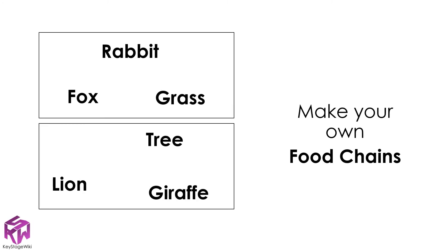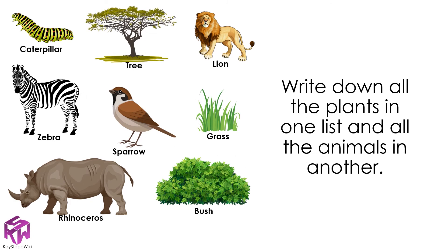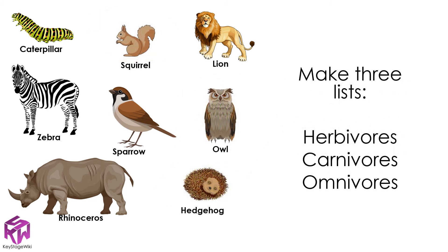The answers to the following questions are shown at the end of the video. See if you can write down your own two food chains using the examples — pause the video now to give it a try. Sort these into two lists: one for all the plants and one for all the animals. Pause the video. Sort these animals, already shown to you in the video, into a list of herbivores, carnivores, and omnivores. Pause the video again.